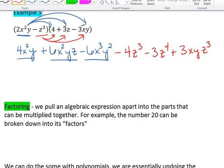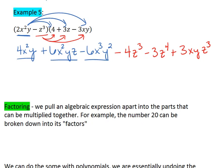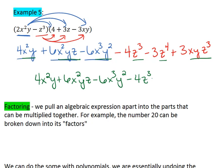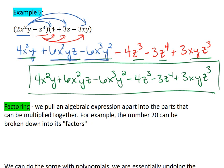We do always want to double check for like terms. We have an x squared y here, but that doesn't appear again. We have x squared yz, that doesn't appear again. We have x cubed y squared which does not appear again, z cubed, z to the 4th, and xyz cubed. Looks like we have all of the terms already combined that can be. So we get 4x squared y plus 6x squared yz minus 6x cubed y squared minus 4z cubed minus 3z to the 4th plus 3xyz cubed. We know it's a long polynomial, but that is our final answer.